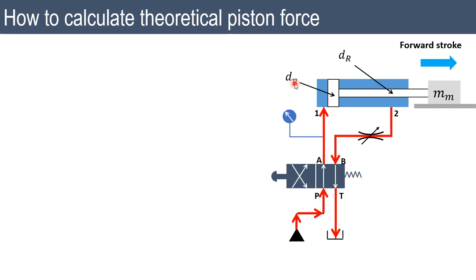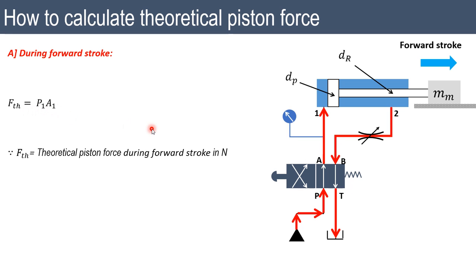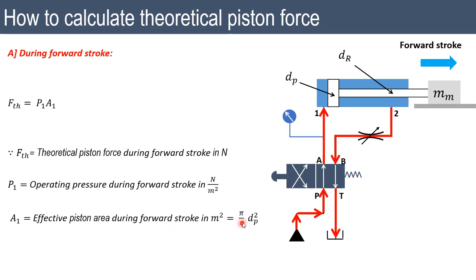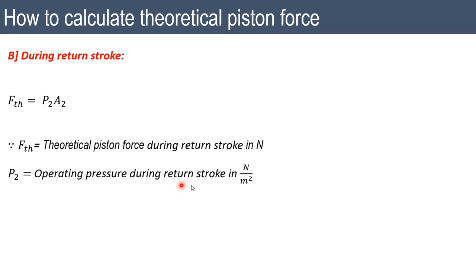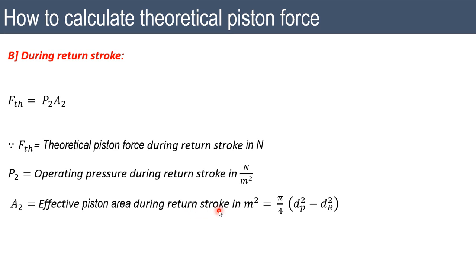Assume dp is the diameter of the piston and dr is the diameter of the piston rod. From the basic definition, pressure = force / area, so force = pressure × area. For the forward stroke, p1 is the operating pressure (in Pascals) and A1 = (π/4)·dp² is the effective piston area, giving theoretical force F = p1·A1. For the return stroke, F = p2·A2, where A2 = (π/4)·(dp² − dr²) is the piston ring area, subtracting the rod area.